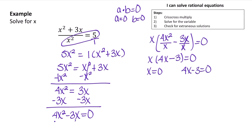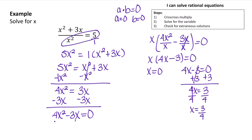By the zero product property, if we multiply two things and get 0, either one of them equals 0. So either x equals 0 or 4x minus 3 equals 0. x equals 0 is a solution. For 4x minus 3 equals 0, we add 3 to both sides to get 4x equals 3, then divide both sides by 4, giving x equals 3 over 4. We always need to plug back in to check for extraneous solutions.